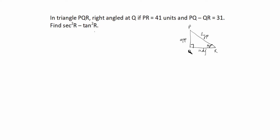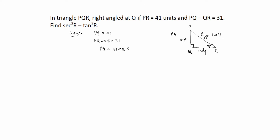Now we will write the given data. In your exam you have to write: given PQ minus QR is equal to 31. So PQ is equal to 31 plus QR. PR is 41, so PR is labeled as 41, and PQ value is 31 plus QR. We do not know QR, so we need to calculate it using the Pythagoras theorem.